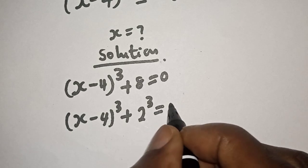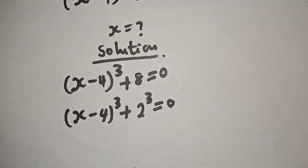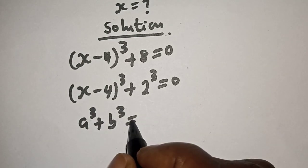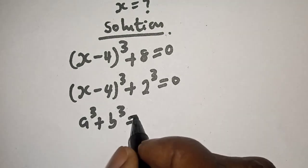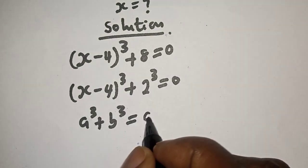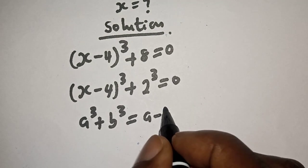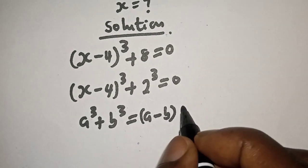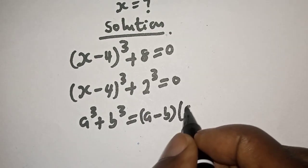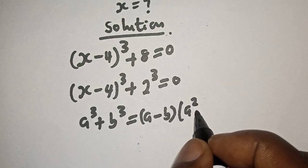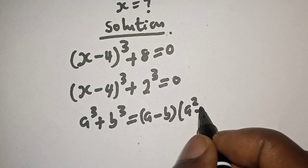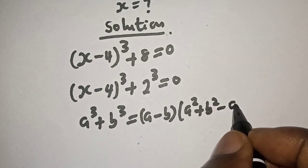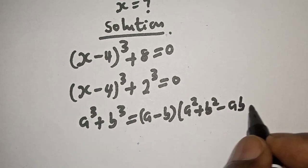Note this rule: a raised to power 3 plus b raised to power 3 is equal to a plus b multiplied by a squared plus b squared minus ab.